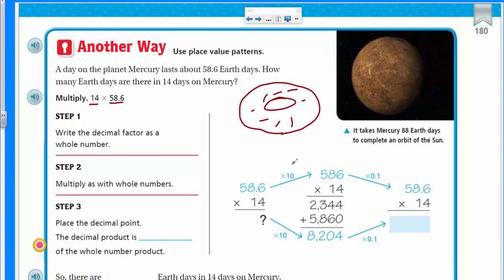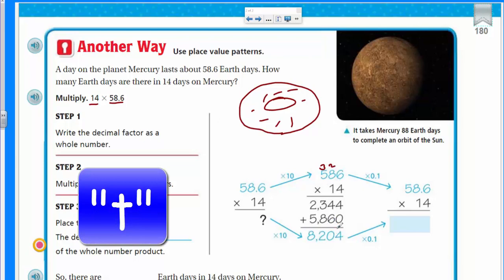Step one: Write the decimal factor as a whole number. We multiply it by 10, gives us 586. Step two is multiply as with whole numbers. We're taking 6 times 4, which is 24. Carry the two. Then we have 32 plus 2 is 34. Carry the three. Then we have 20 plus 3 is 23. Now you got your placeholder in there because we're getting ready to multiply from the tens column.